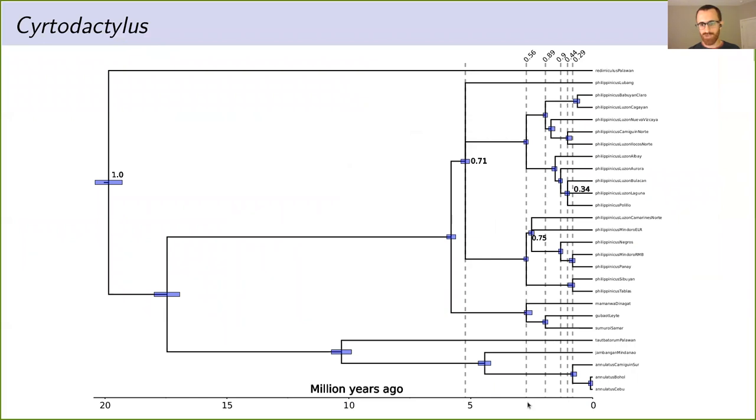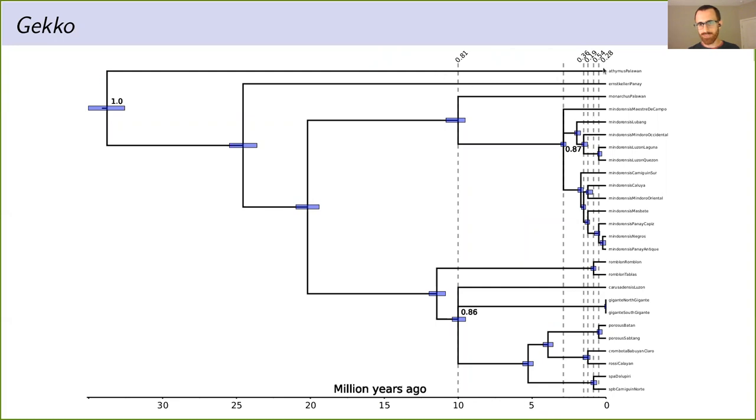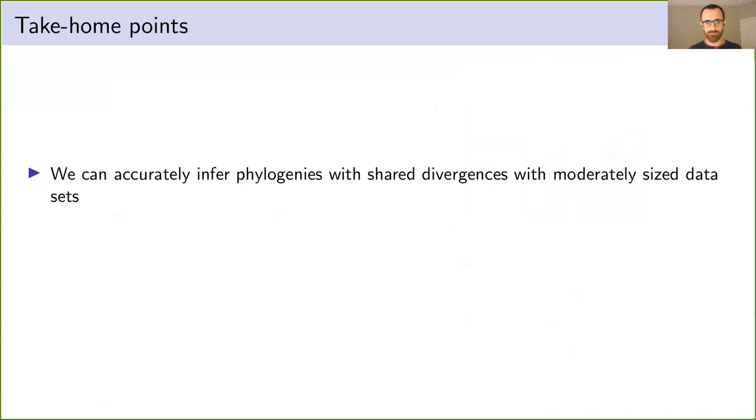So here's the bent-toed geckos. Over the last five million years, we found support, some of it weak, some of it strong, for six shared divergence events and or multifurcations within the last five million years. That's during the period that we're interested in when the glacial cycles were occurring. So that is interesting to see. The genus gecko, we see about the same thing. So six shared divergence times and or multifurcations, and most of them are within the last five million years. So that seems to support the predictions of the hypothesis that this island fragmentation could be driving diversification in these groups.